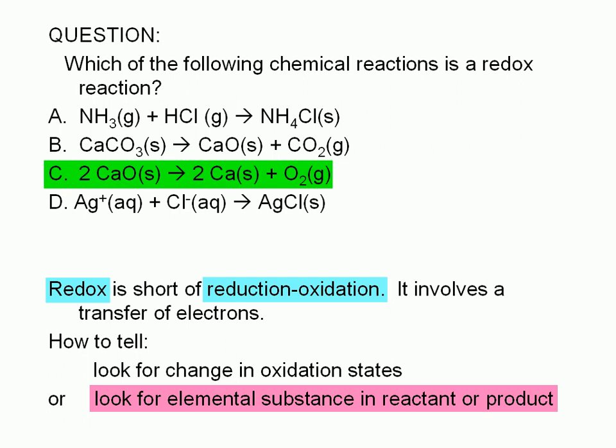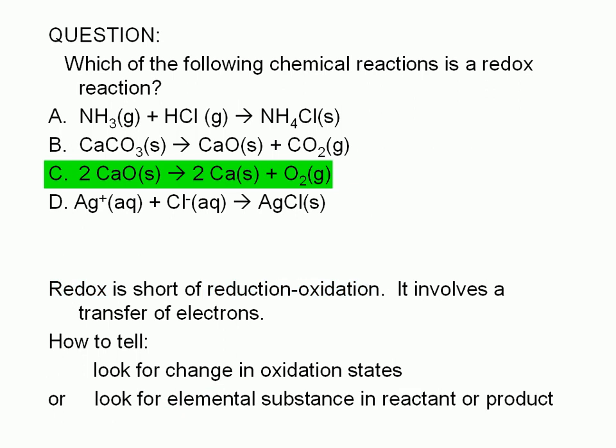By assigning oxidation numbers, we can verify that the reactions in choices A, B, and D are not redox reactions. But we don't have to in this case, since there is only one correct answer. In case you're wondering about choice D, the silver ion and chloride ion do not represent elemental substances. The fact that these are ions means that they are part of a compound.